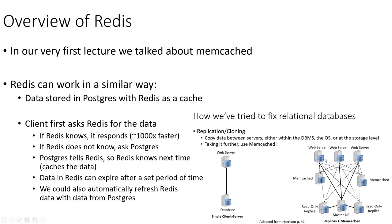The idea with cache servers is that when a web server or application server sends a request for data we've already fulfilled before, the cache server can immediately return the answer instead of running that database query again. Memcached is a very popular solution for this, but Redis is also very popular for caching. In fact, our Redis server is running in Amazon ElastiCache, which can be configured as either a Memcached or a Redis server.